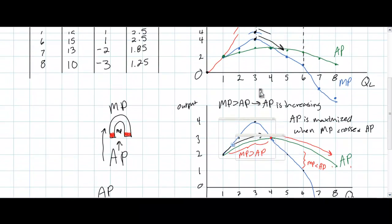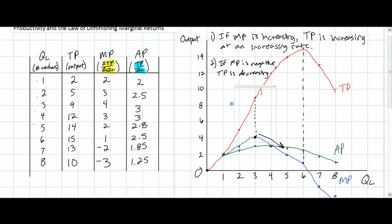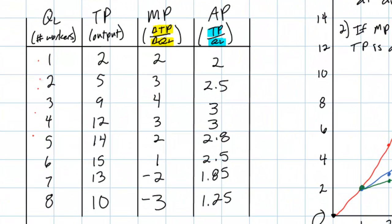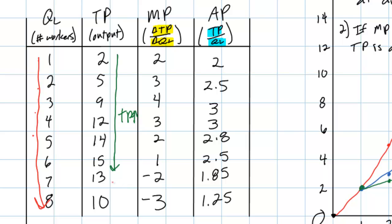So now we have illustrated all the different relationships between the average, marginal, and total product curves in a firm as it hires more workers in the short run. In our paper chain factory, we were producing paper chains and output was measured by the number of links in the chain. As more workers were hired — from one worker to eight workers — total product increased at first due to marginal product being positive. From one to six workers total product was increasing, but beyond six workers total product was decreasing.